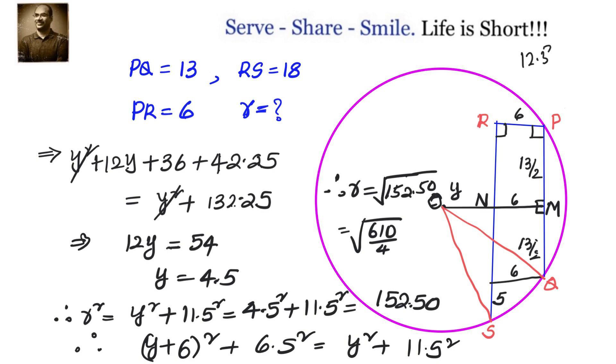Approximately, because we know 12.3² is 151.29 and 12.4² is 153.76, exactly somewhere in the middle. So we can take it as 12.35 or 12.34. So that is the radius.